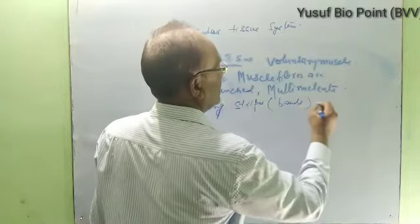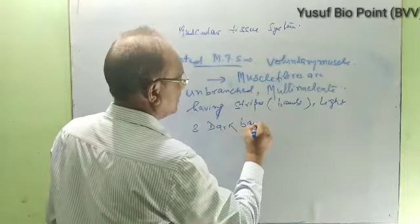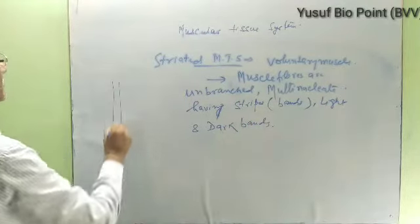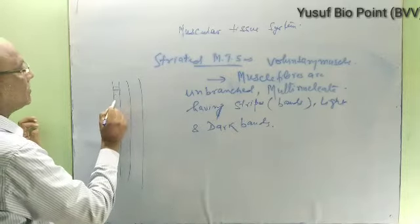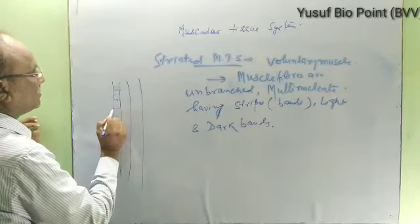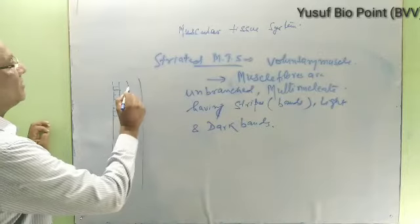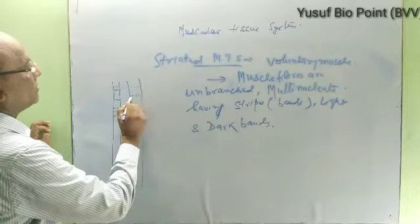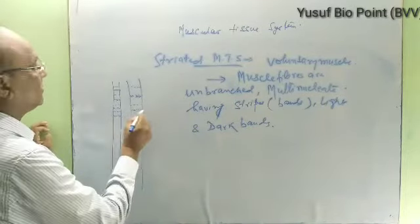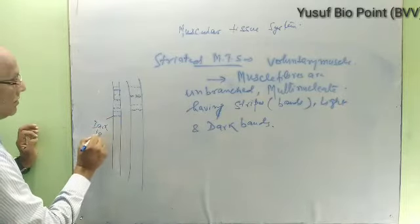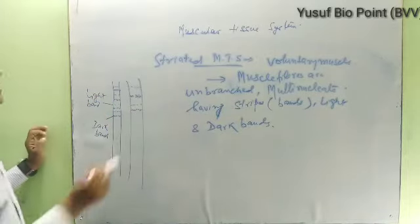These bands are light bands and dark bands. In this form, this is the light band and this is the dark band. Some are strong. These light and dark bands are alternating in the striated muscle fibers.